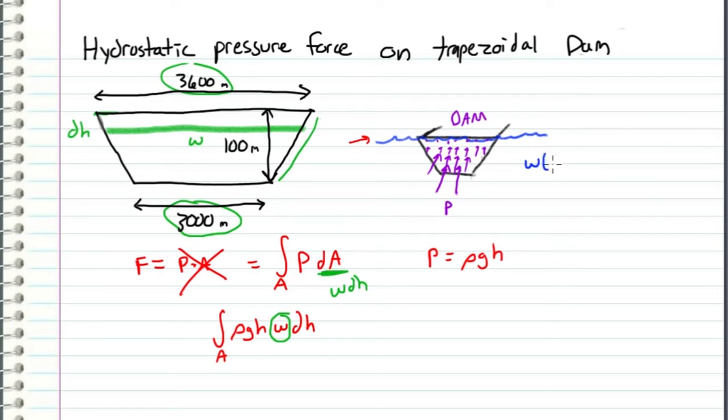We know that w(0), the width at 0 depth, equals 3600, and the width at a depth of 100 meters equals 3000. Therefore we can calculate the slope, or the rate of change of the width of this trapezoid, which is 3000